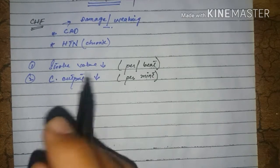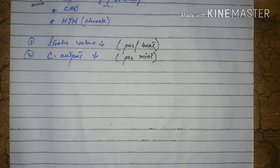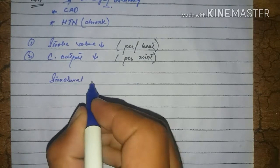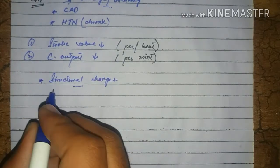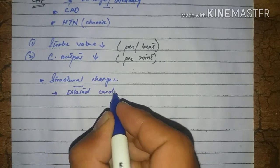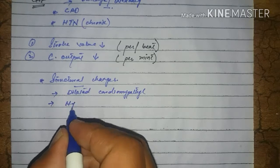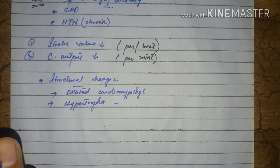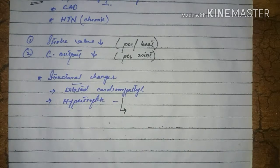When there is low stroke volume or less cardiac output, the heart tries to compensate. How does the heart compensate? It tries to compensate through structural changes. Compensation comes at the cost of structural changes, and what happens is dilated cardiomyopathy or hypertrophic cardiomyopathy occurs.